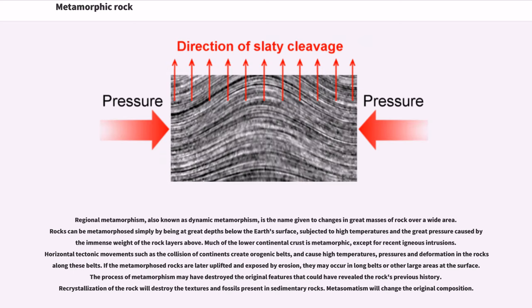Regional metamorphism, also known as dynamic metamorphism, is the name given to changes in great masses of rock over a wide area. Rocks can be metamorphosed simply by being at great depths below the Earth's surface, subjected to high temperatures and the great pressure caused by the immense weight of the rock layers above. Much of the lower continental crust is metamorphic, except for recent igneous intrusions. Horizontal tectonic movements such as the collision of continents create orogenic belts and cause high temperatures, pressures and deformation in the rocks along these belts. If the metamorphosed rocks are later uplifted and exposed by erosion, they may occur in long belts or other large areas at the surface.